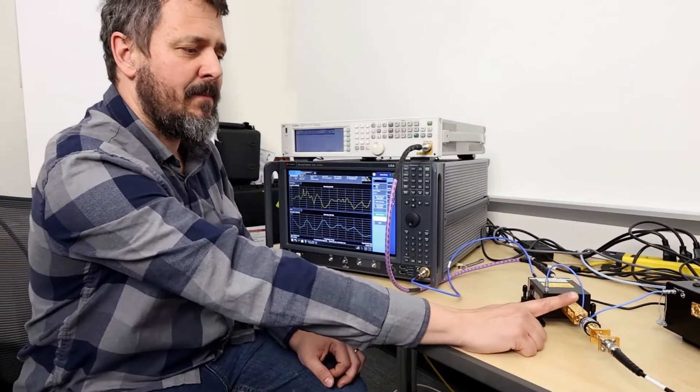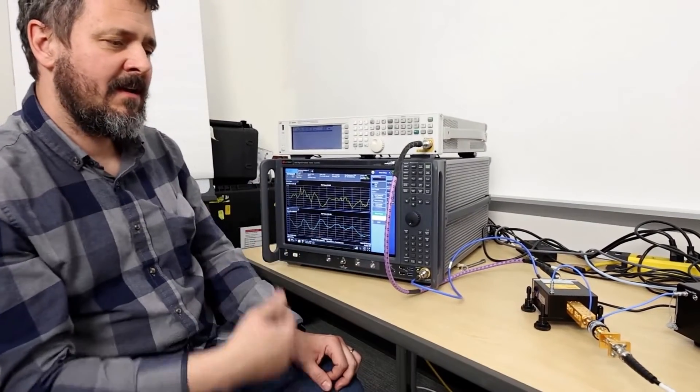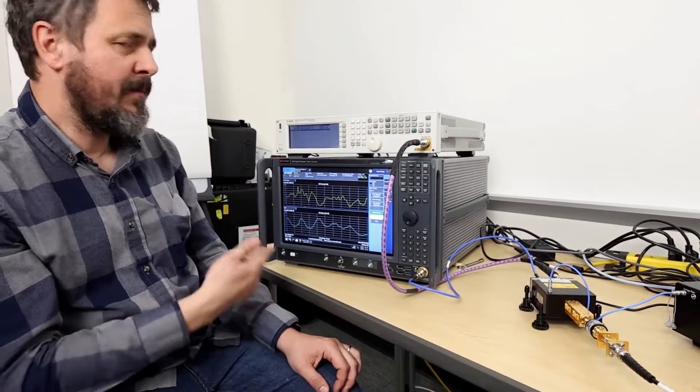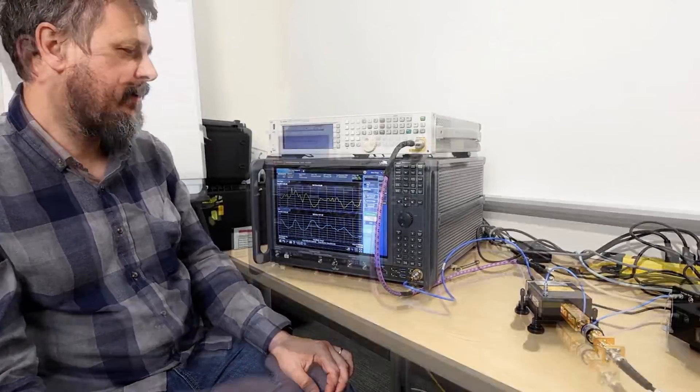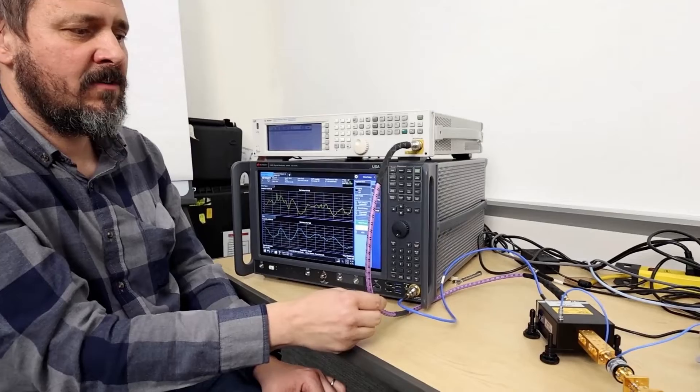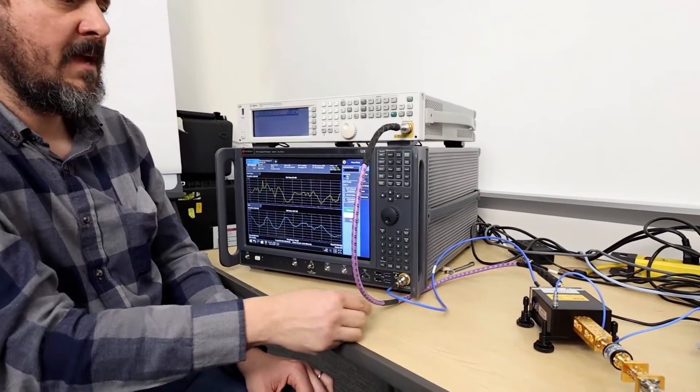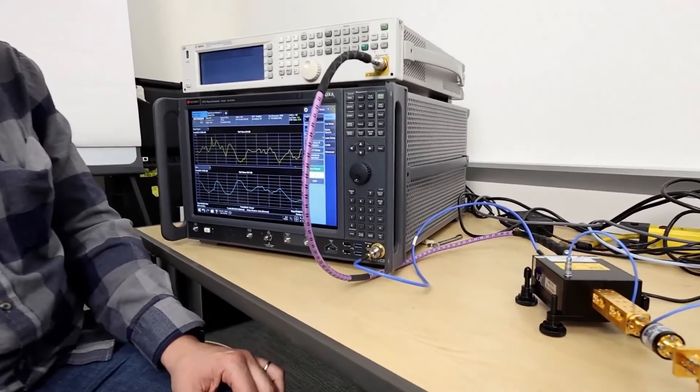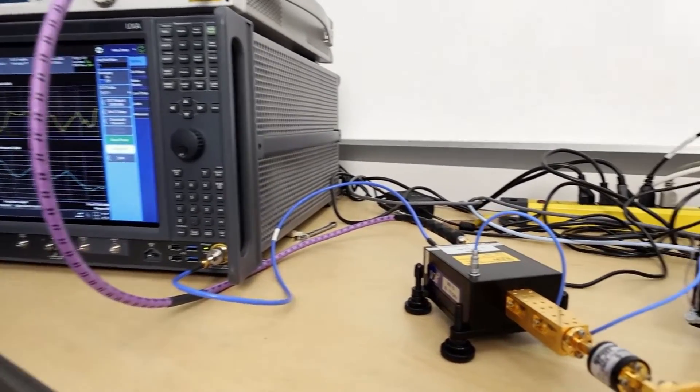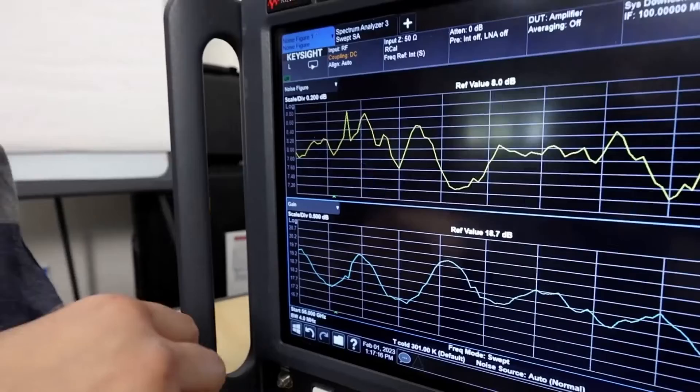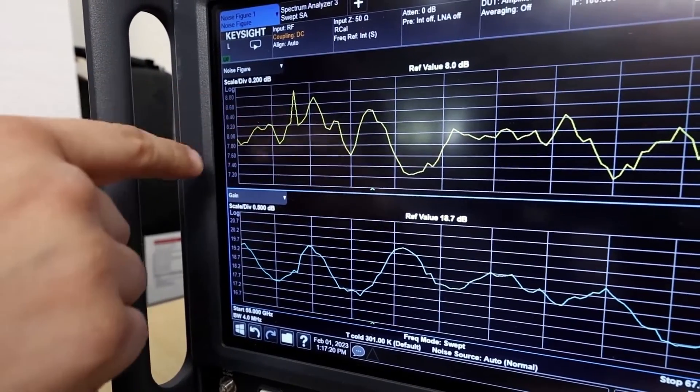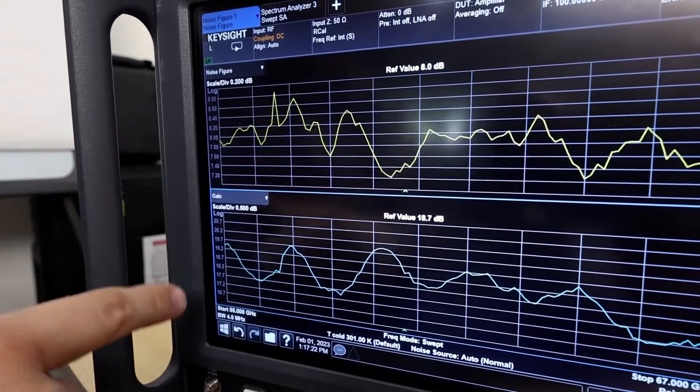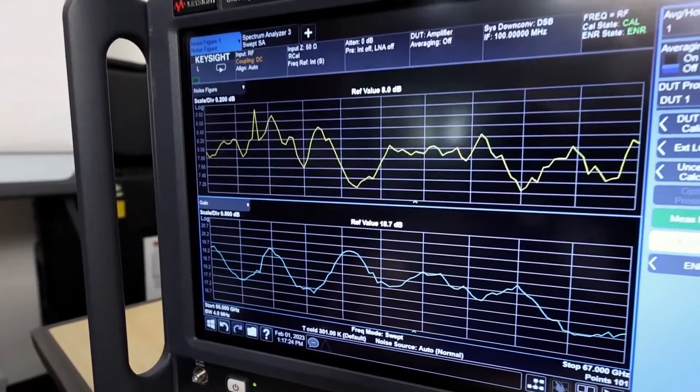I've connected up our amplifier and now I'm making our noise figure measurement. And I'm getting similar results to what I got using the frequency range extender. I'm using an MXG as our LO source. And so the LO is being doubled inside the VDI downconverter. Now I've put in our DUT and we're getting similar results to what we got with the frequency range extender, which is about 8 dB of noise figure and about 19 dB of gain.